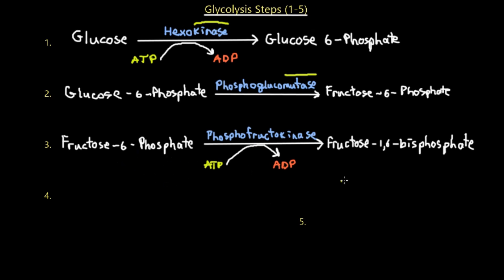Step three: fructose 6-phosphate is transformed into fructose 1,6-bisphosphate by adding another phosphate molecule. This means a kinase enzyme is used again — kinases catalyze phosphorylation reactions. Another ATP molecule is used to phosphorylate fructose 6-phosphate, adding a second phosphate to the molecule.